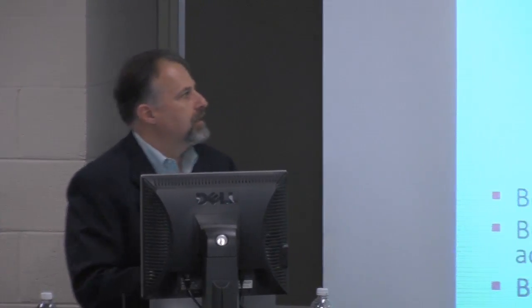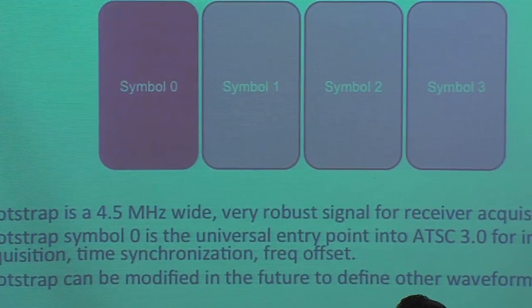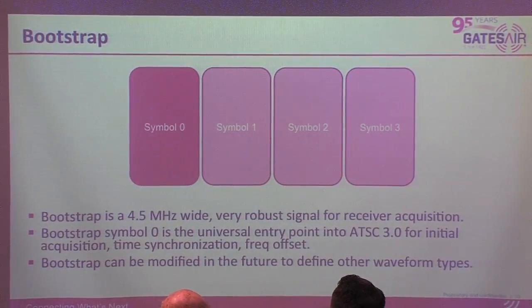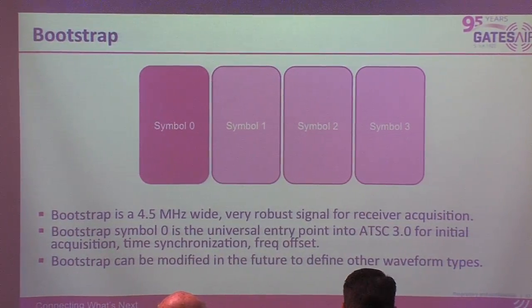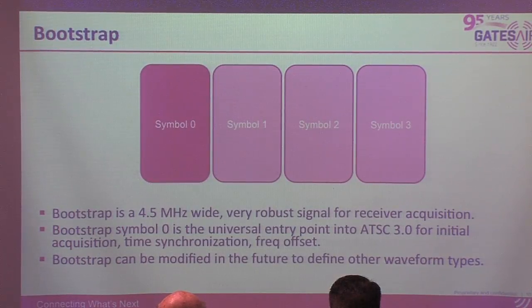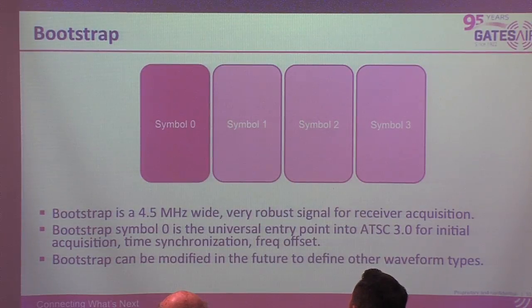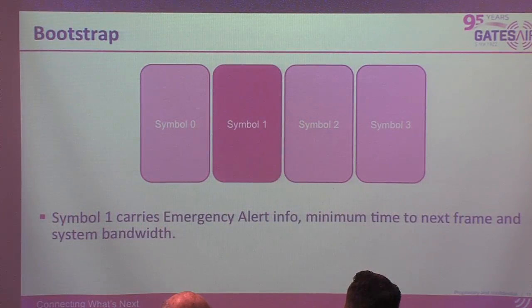The bootstrap is four symbols long, and symbol zero is the universal entry point in the ATSC-3 system for initial acquisition, time synchronization, and frequency offset. It also identifies the waveform type, so a future ATSC-3.1, ATSC-4.0, or another standardized waveform could be multiplexed in the time domain. An ATSC-3 receiver can identify its waveform, decode what's meant for it, and ignore other waveforms entirely — allowing significant future extensibility.